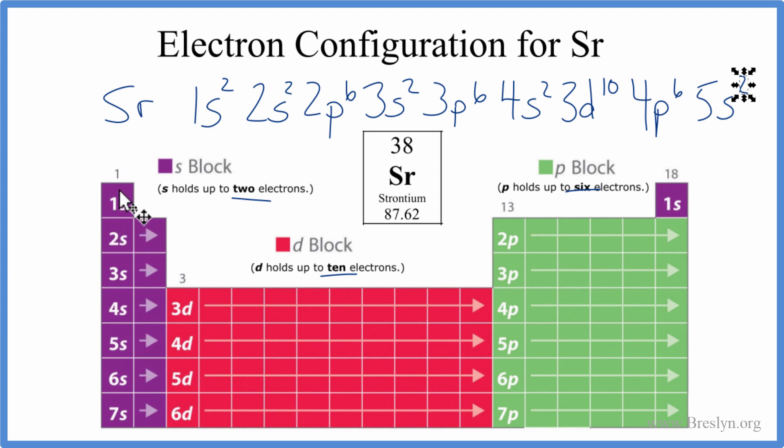Strontium, if you look down the periodic table, you go down 1, 2, 3, 4, 5 periods. It's 5s². That's strontium right there.